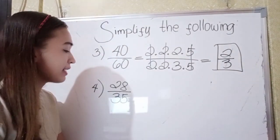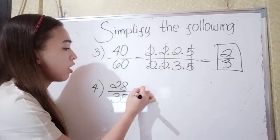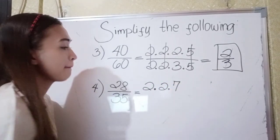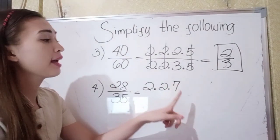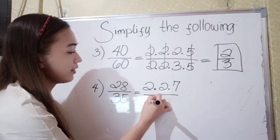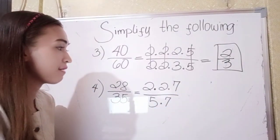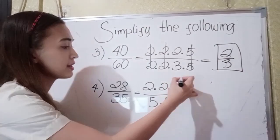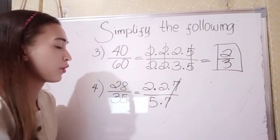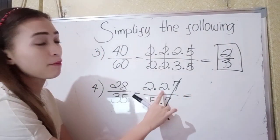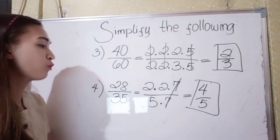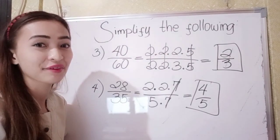We have number 4, which is 28 over 35. So what are the factors of 28? We have 2 times 2 times 7. Because 2 times 2 is 4, and 4 times 7 is 28. Over, we have 5 times 7, because 5 times 7 is 35. Since 7 divided by 7 is 1, so that is cancelled. So 2 times 2 is 4 over 5. The simplified form of 28 over 35 is 4 over 5.